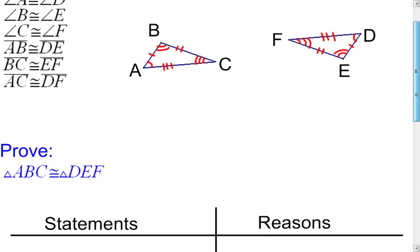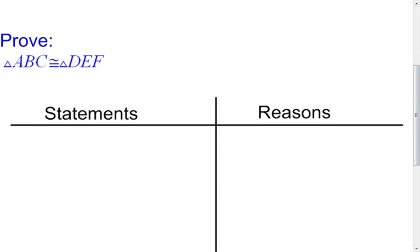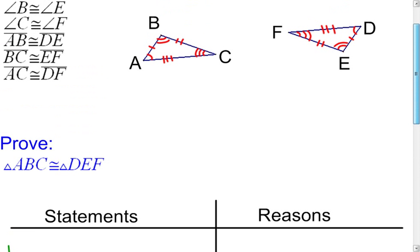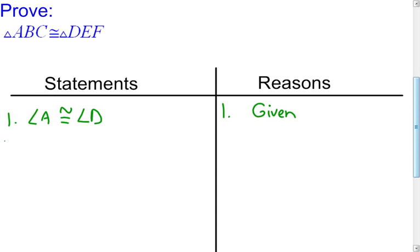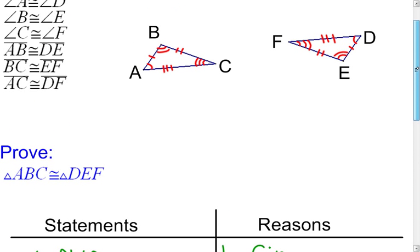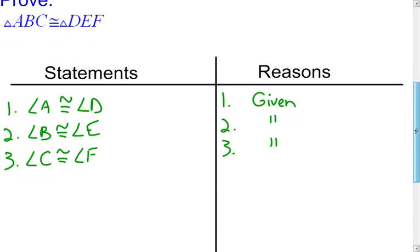Now it goes on to step five — writing the actual proof. I'm going to write it as a two-column proof. Statement one: angle A is congruent to angle D. Reason: given. Statement two: angle B is congruent to angle E. Reason: given. Statement three: angle C is congruent to angle F. Reason: given.